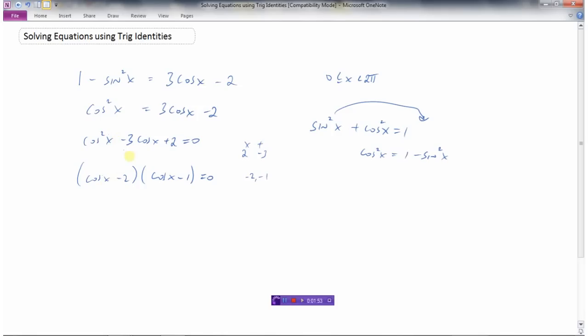Just going to double check here. Cos times cos is cos squared, minus 1 cos x minus 2 cos x is minus 3 cos x, and negative 2 times negative 1 is positive 2. So my factoring was done right.